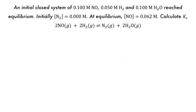In this question, we're told that an initial closed system contains 0.1 molar NO, 0.05 molar H2, in equilibrium with 0.1 molar H2O, and N2, which is initially 0 moles. At equilibrium, the concentration of NO is equal to 0.062 molar, and we're being asked to calculate Kc. The first thing to do is to form our ICE table.